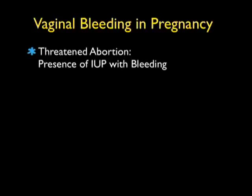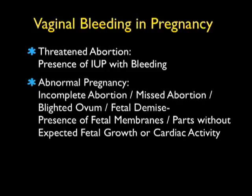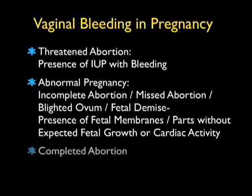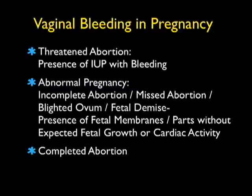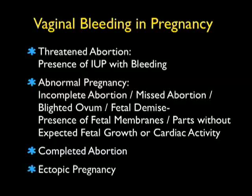When caring for a patient with vaginal bleeding in pregnancy, there are four main classifications of diagnoses. The first is a threatened abortion, defined as the presence of an intrauterine pregnancy with bleeding. The second encompasses incomplete abortion, missed abortion, blighted ovum, and fetal demise — all meaning the presence of fetal membranes or parts without expected fetal growth or cardiac activity. The third is a completed abortion, with no further fetal membranes or parts and a closed cervical os. The fourth and most dangerous is ectopic pregnancy.